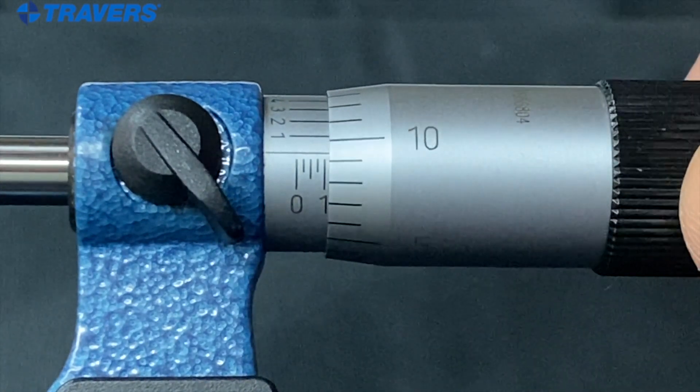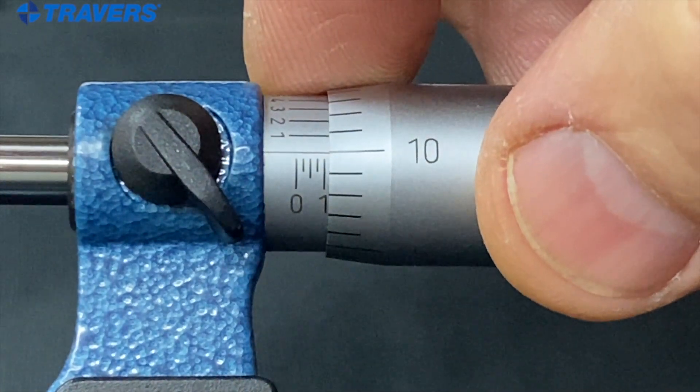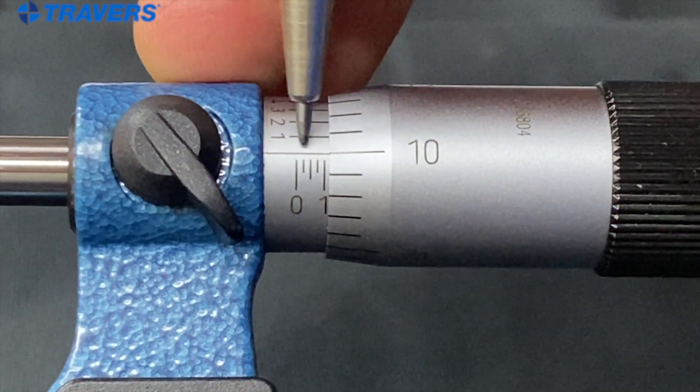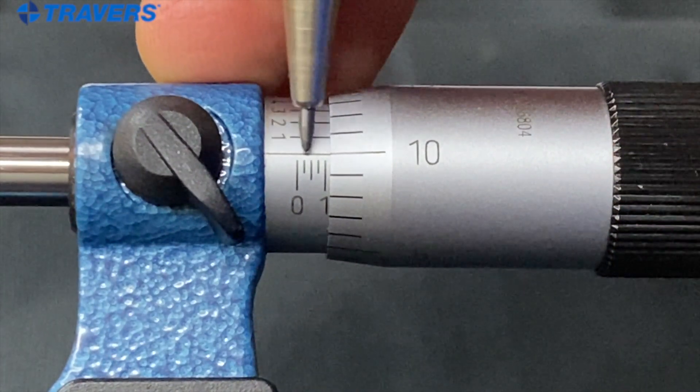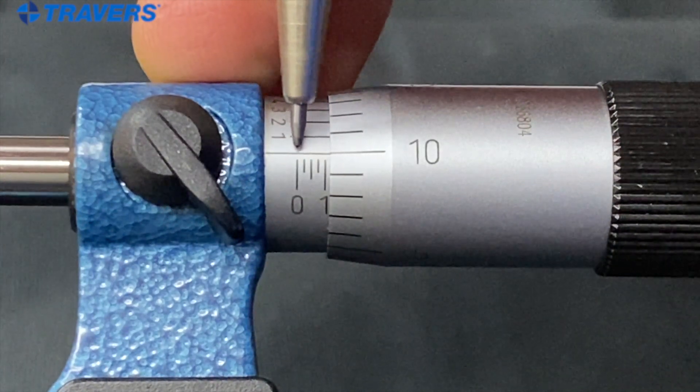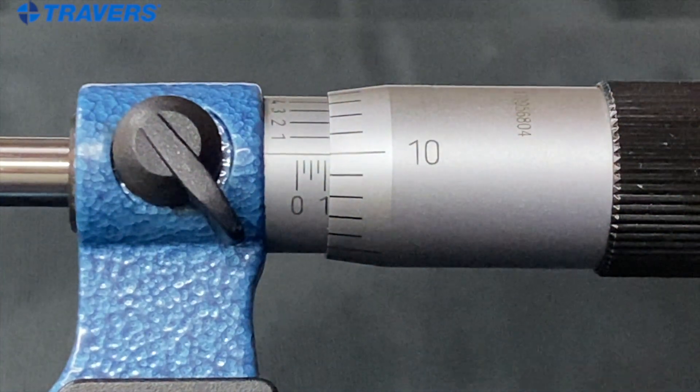What if we put it on the 10 so that the line next to the number 10 is lined up with this line. This is the line, if you haven't noticed already, I should have said earlier, this is the line we're going to read from with the lines and numbers on the thimble.